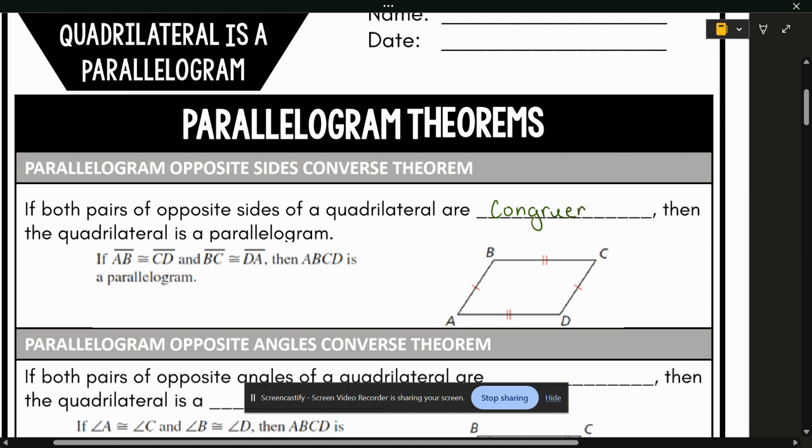So if opposite sides of a quadrilateral are congruent, then the quadrilateral is a parallelogram. This helps us because then those lines will be parallel to each other.